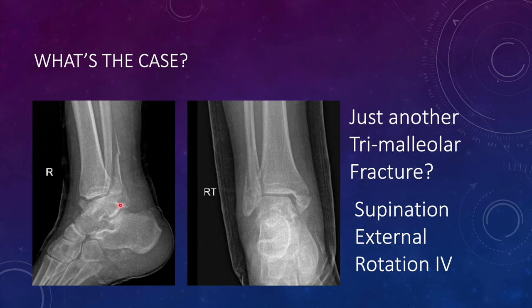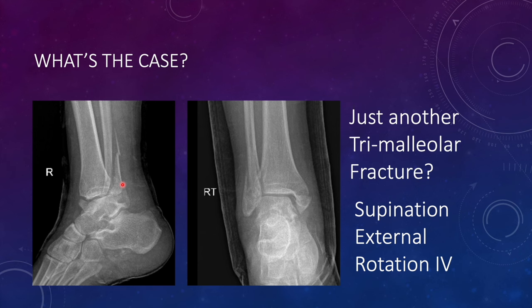In this lateral oblique view, we see there is an oblique fracture of the lateral malleolus with some comminution in the proximal part. There is a transverse fracture of the medial malleolus and a posterior malleolar fragment. This is a trimalleolar fracture, classified as Lauge-Hansen supination external rotation type 4, because there is a transverse fracture of the medial malleolus, the lateral malleolar fracture is low and oblique, entering antero-inferiorly and going proximally, and there is also a posterior malleolar or Volkmann fragment.